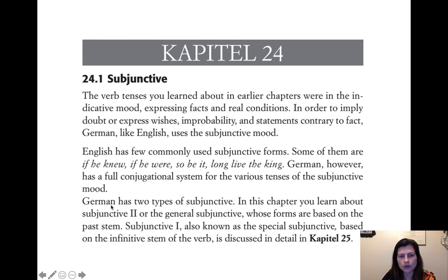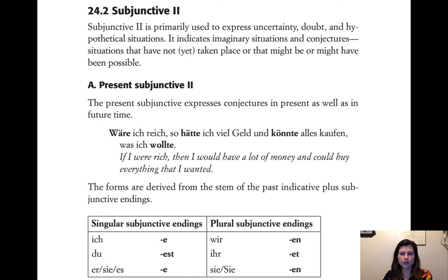German has two types of the subjunctive. In this chapter we are learning subjunctive two, whose forms are based on the simple past stem. There are two ways to form it: the one-word version or the würde plus infinitive version. Subjunctive one is a whole different form — that's next chapter. Subjunctive two is primarily used to express uncertainty, doubt, hypothetical and imaginary situations, conjectures, and situations that are not yet taking place or might have been possible.